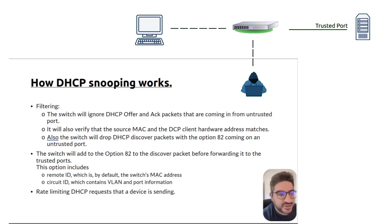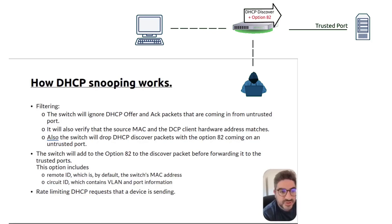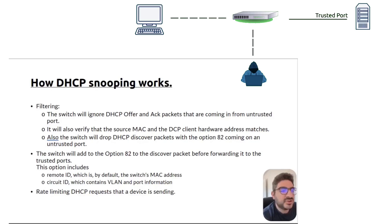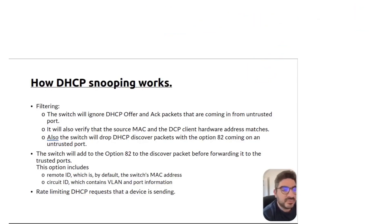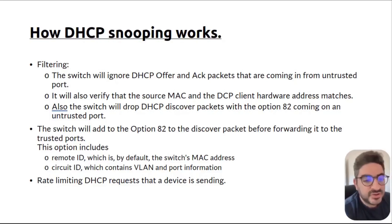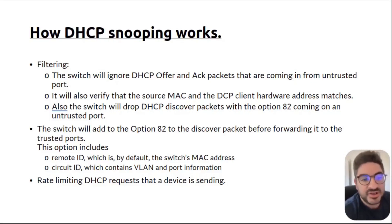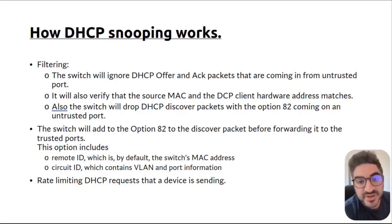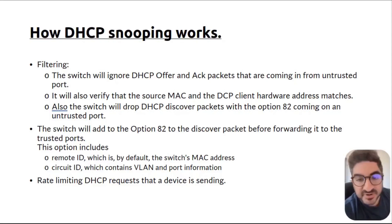Option 82 works like this: whenever the switch receives a Discover packet on an untrusted port, it adds Option 82 before forwarding it to the trusted port. Option 82 includes the Remote ID, which is by default the switch MAC address, and the Circuit ID, which contains the VLAN of the user and the port where the user is connected. You can modify both of these, and I'll show you how later. If your DHCP server doesn't handle Option 82, you can disable this feature. Option 82 gives the DHCP server more visibility and allows you to impose security restrictions. DHCP snooping can also help with rate limiting — you can limit the number of DHCP requests sent from a particular interface to prevent DHCP flooding.